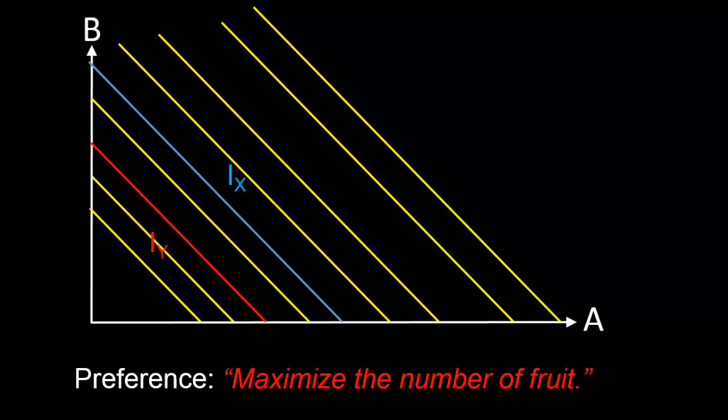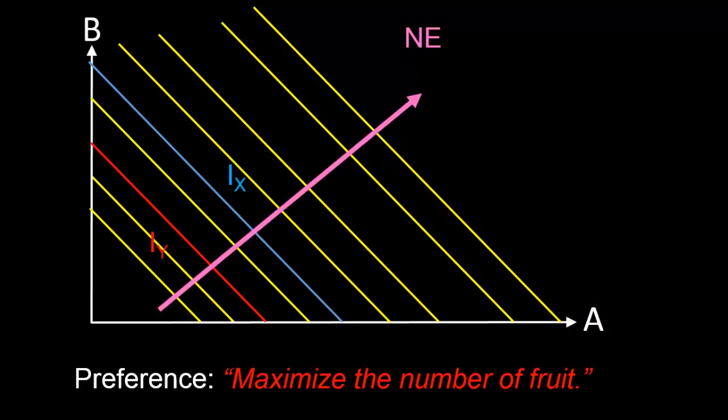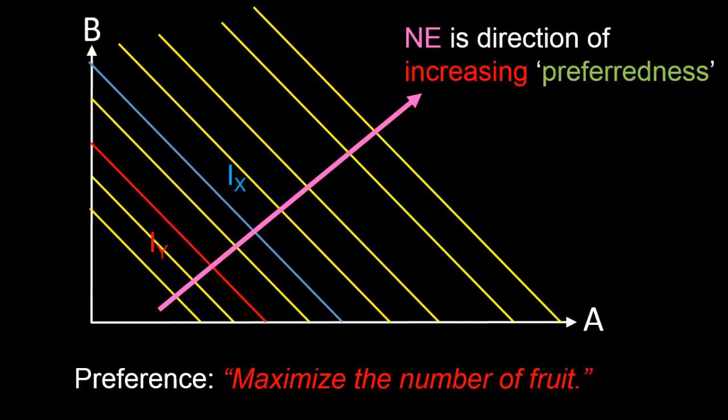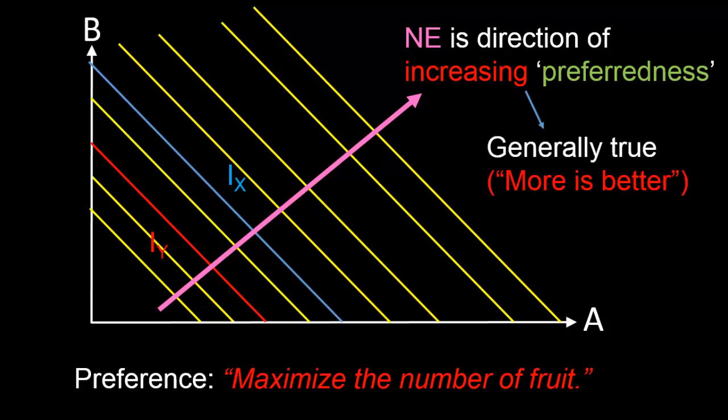Let's end this video by noting that northeast is the direction of increasing preferredness. That is to say, Chris strictly prefers being on an indifference curve that's as far to the northeast as possible. In general, this is going to be true so long as the preference of concern is one that satisfies the rule: more is better.